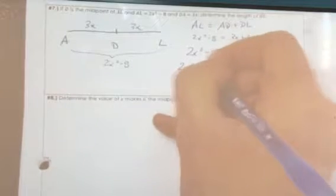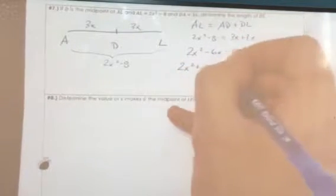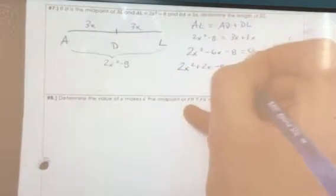So now we have 2x squared plus 2x minus 8x minus 8 equals 0.